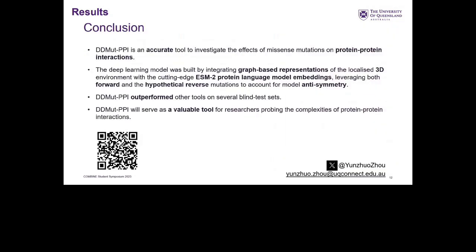In conclusion, DDMut-PPI is an accurate tool to investigate the effects of missense mutations on protein-protein interactions. The deep learning model integrates graph-based representations of the localized 3D environment with ESM2 protein language model embeddings, leveraging both forward and hypothetical reverse mutations to enforce model anti-symmetry. It outperformed other tools on several blind test sets and will serve as a valuable tool for probing the complexity of protein-protein interactions. Questions and inquiries can be sent via email or Twitter.